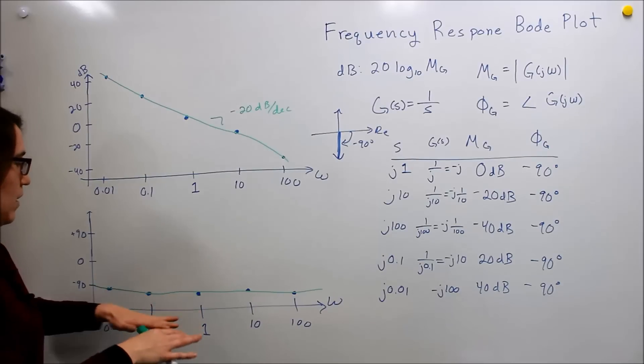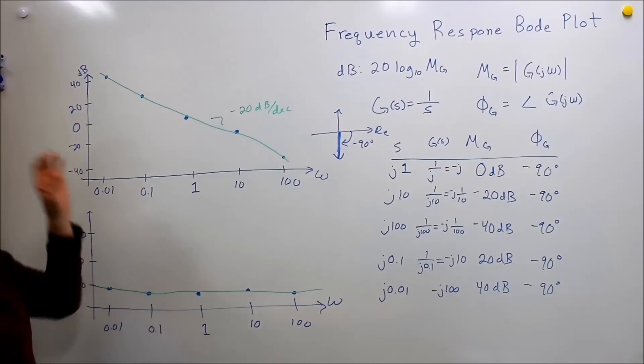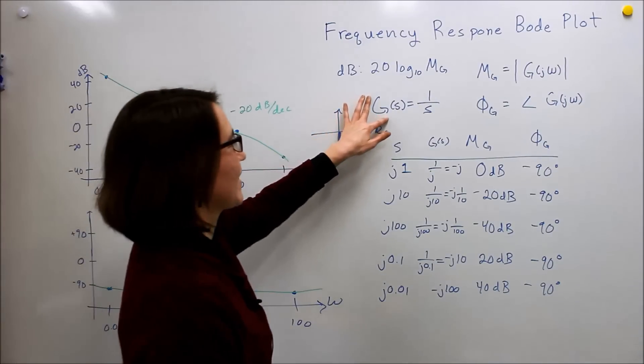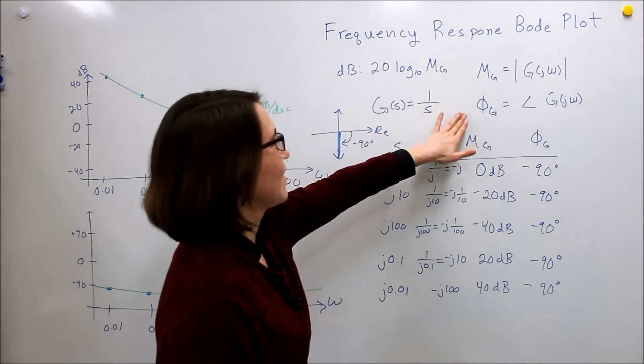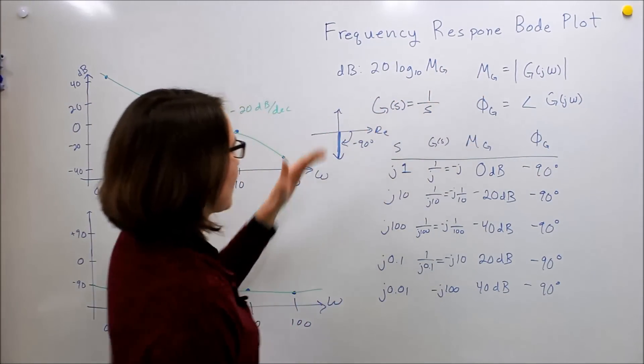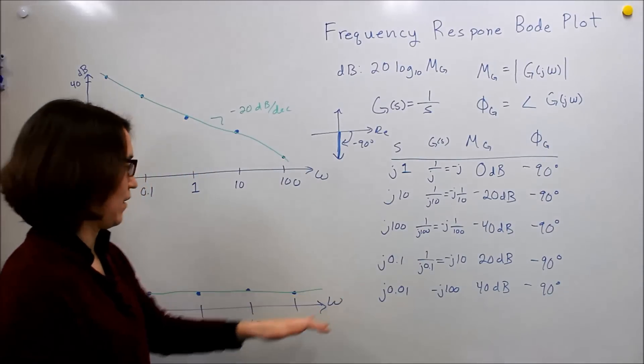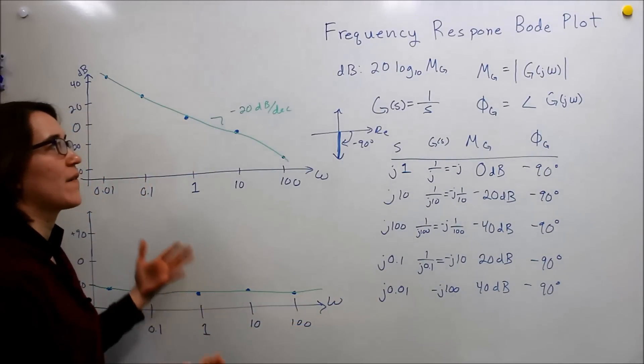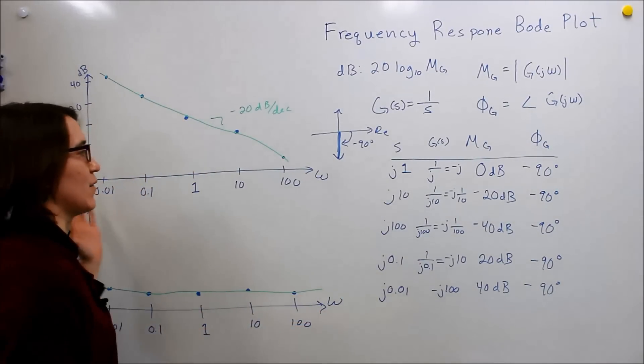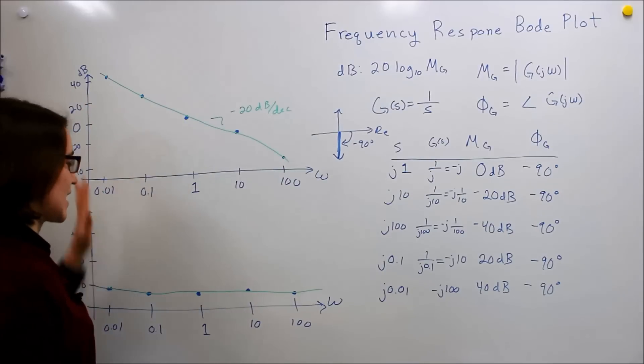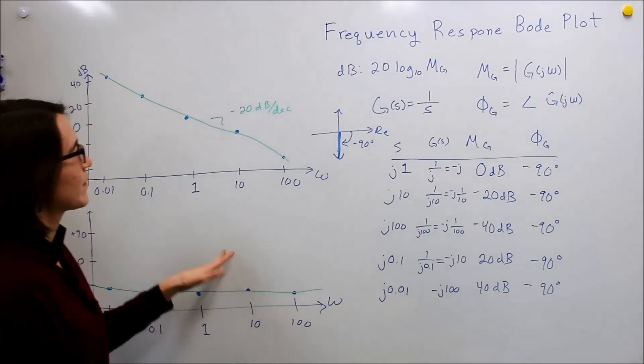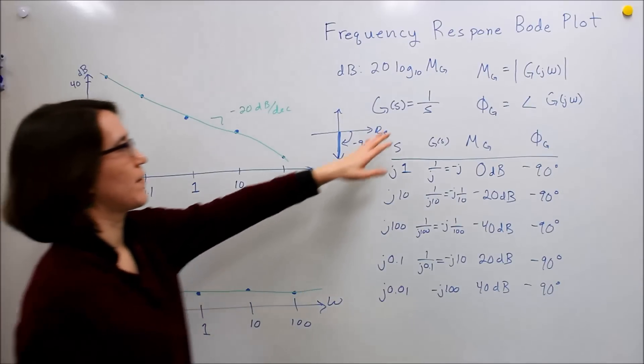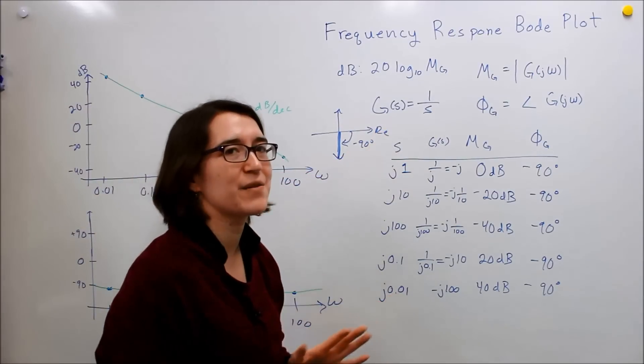But the important thing to remember is that you take this, plug it into these different equations, and we can look at various points, test various points of omega, and figure out how our system is changing at different frequencies. How it's in magnitude changing, and how is the phase changing. So this is the Bode plot for 1 over S. And we'll move to more complicated ones next.